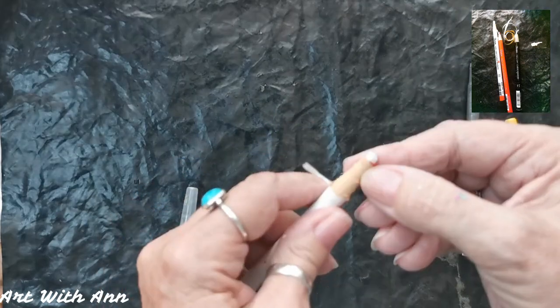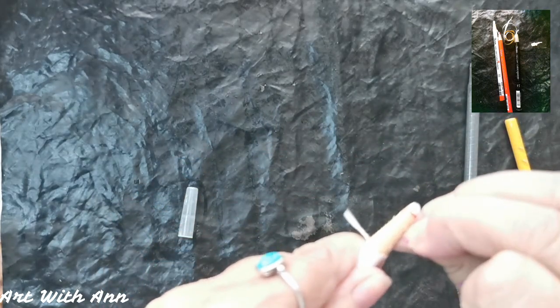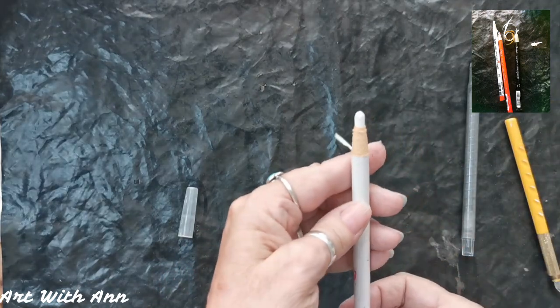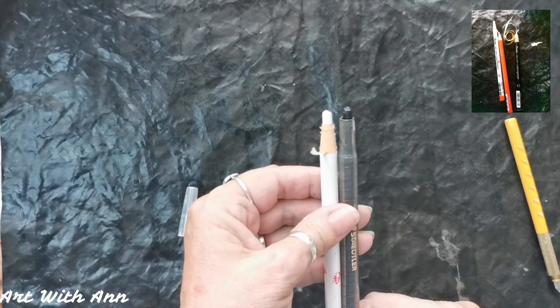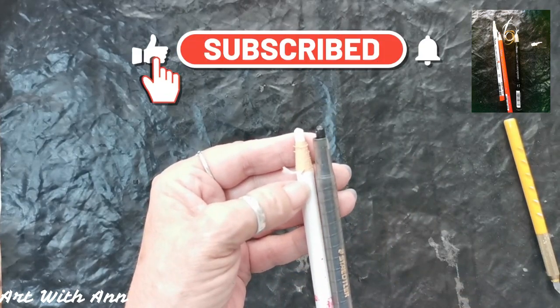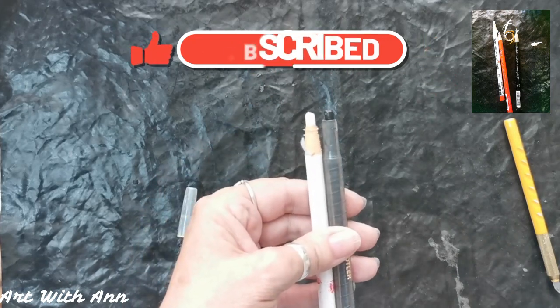And that's how you peel a china marker—very easy and very simple. So just take it up to the first mark and peel it up. That's it, have a lovely day!